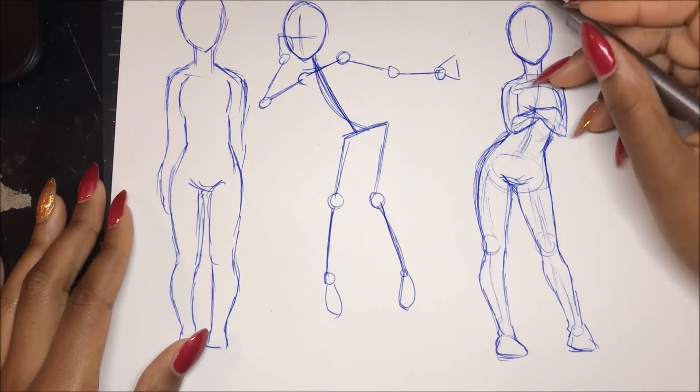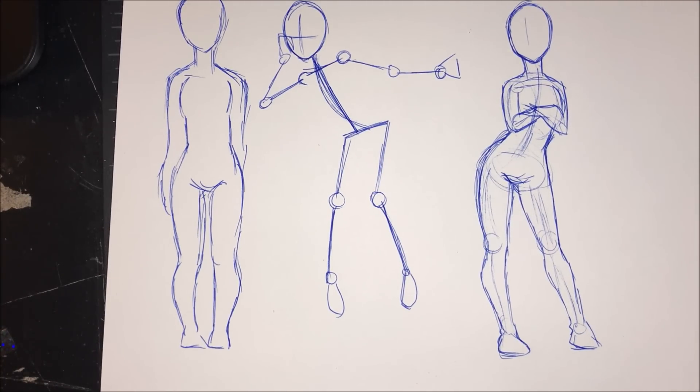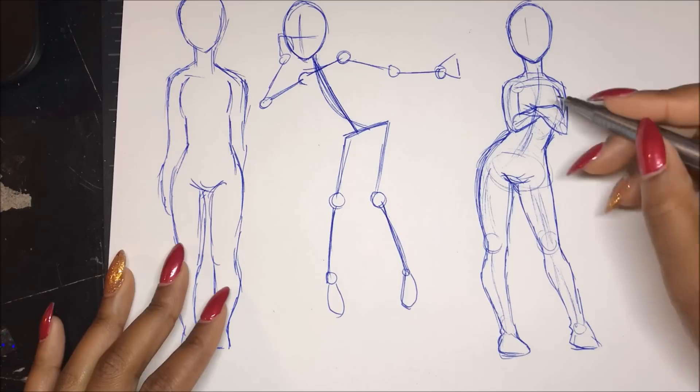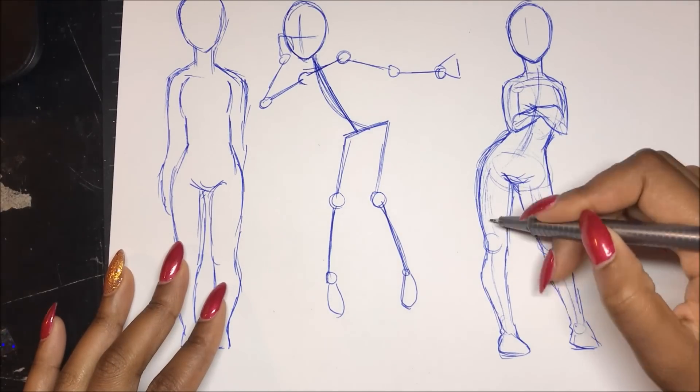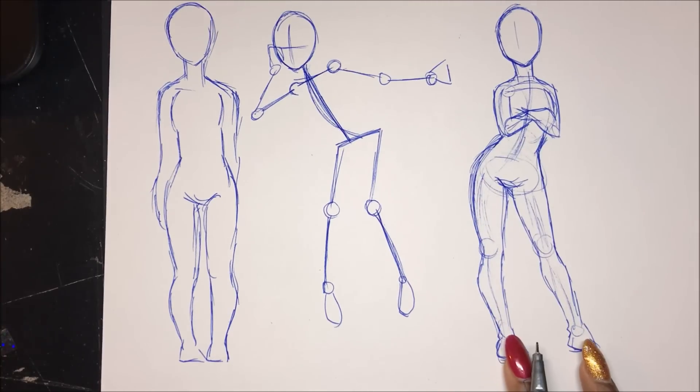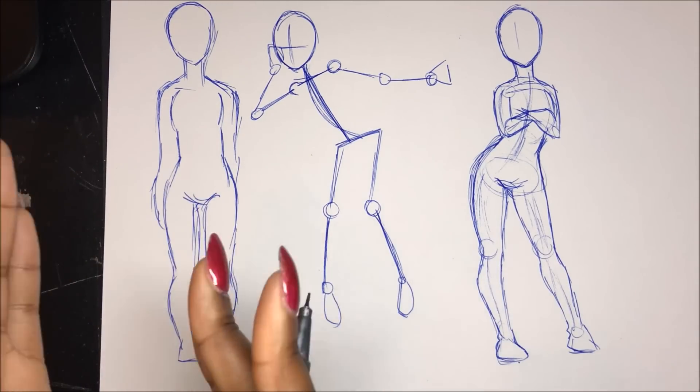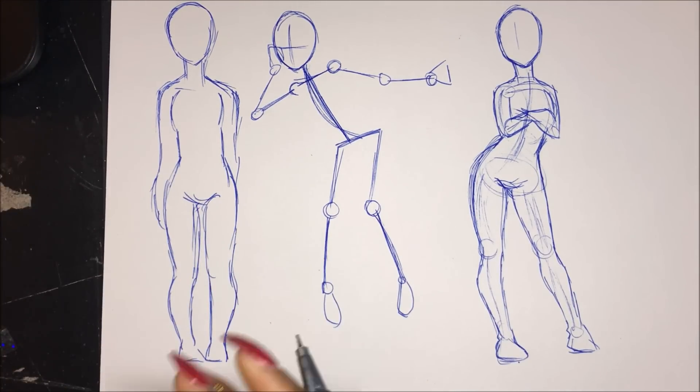You can tell which leg has the pressure applied on it just by the way they're standing. Their butt's a little tooted out, but that's fine. You can tell which leg has the pressure on it. It is actually this leg. This one's kind of relaxing over here.